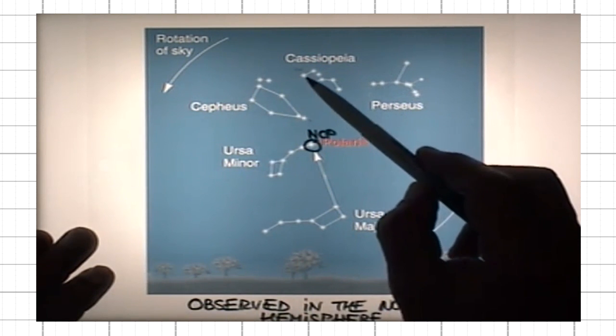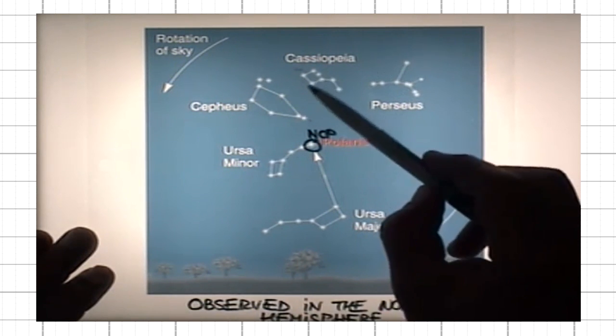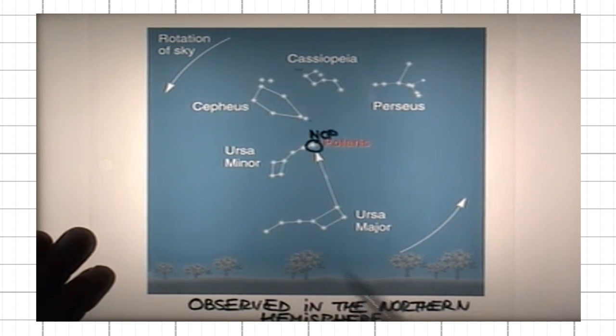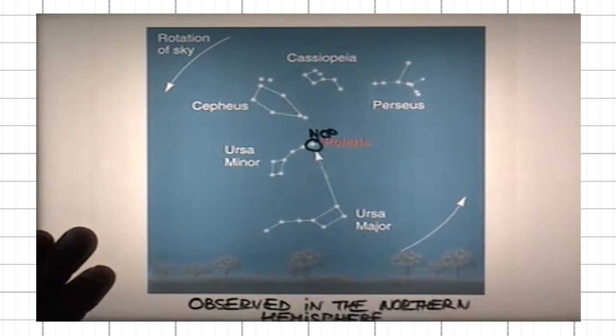Cassiopeia, that has the shape of the letter W. It's named after an Egyptian princess. There is another one, Perseus, Cepheus and so on.